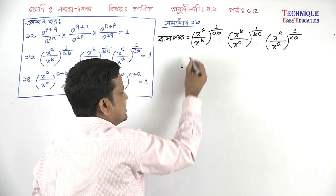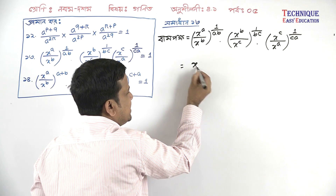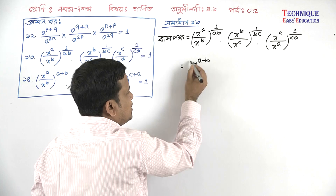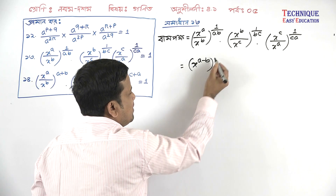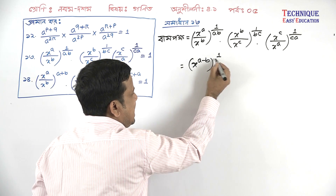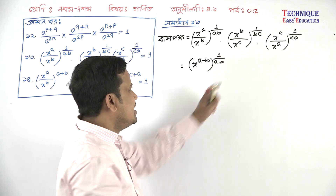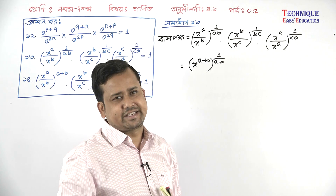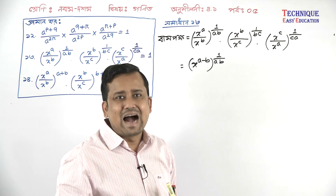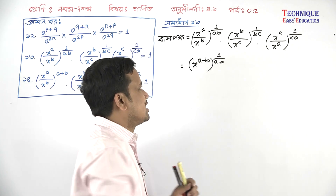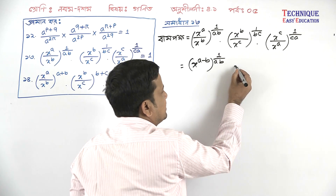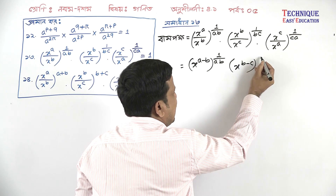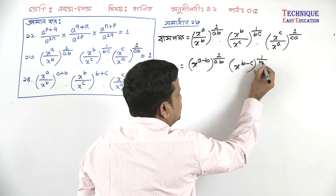X to the power a minus b, multiplied by one over ab, and X to the power b minus c, multiplied by one over bc.